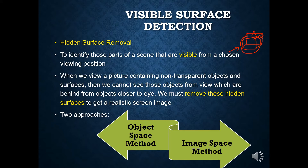There are two types, or two approaches, or two methods of visible surface detection: the object space method and the image space method. Let's find out the differences between these two approaches in the next slide.